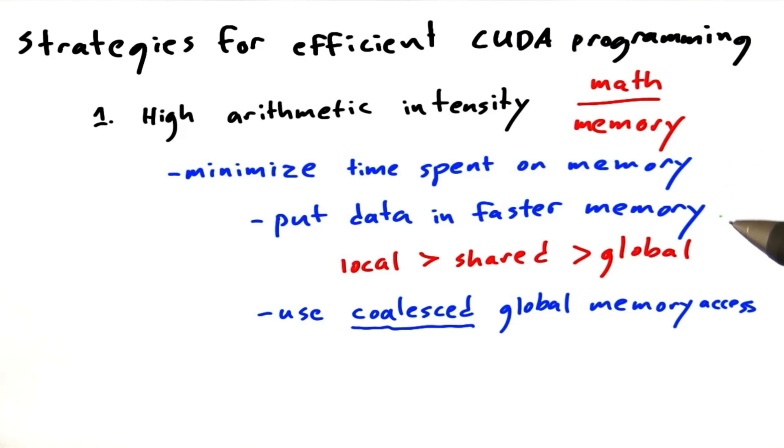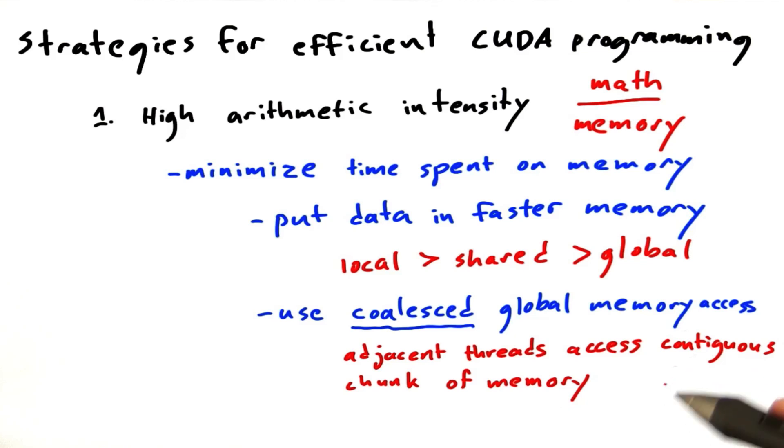Part of that is simply moving data to faster memory if you're going to access it a lot, keeping in mind that the fastest memory of all is local variables, followed by shared memory, followed by global memory. Another thing you can do is use coalesced global memory accesses. So when you are accessing global memory, try to do it quickly. The trick there is adjacent threads are accessing a contiguous chunk of memory. Usually they're accessing adjacent memory locations.